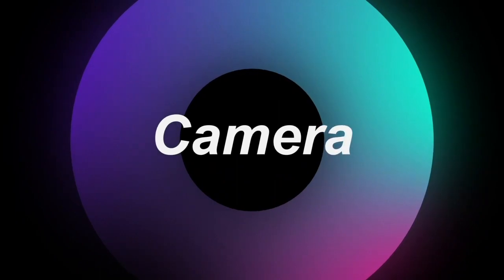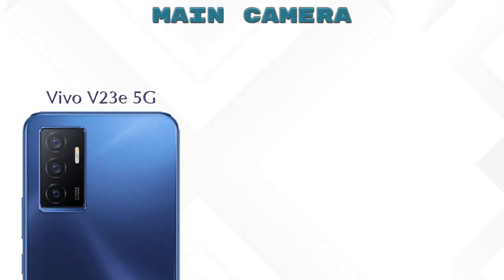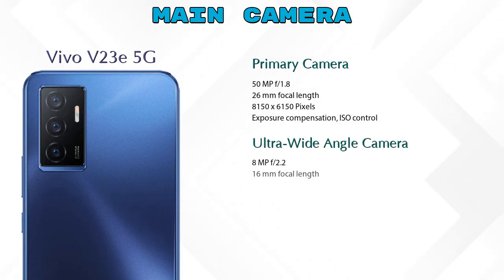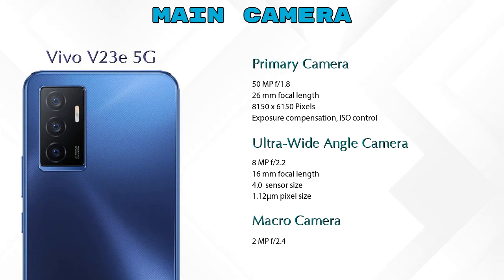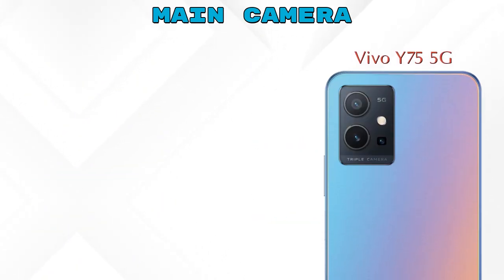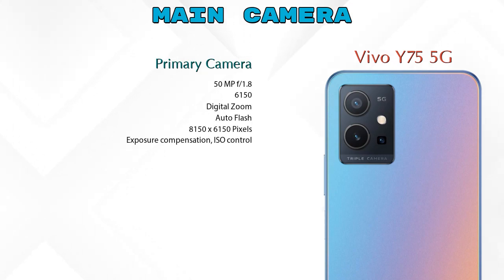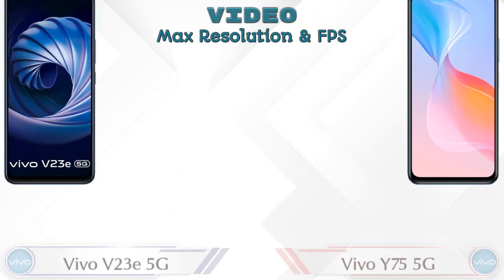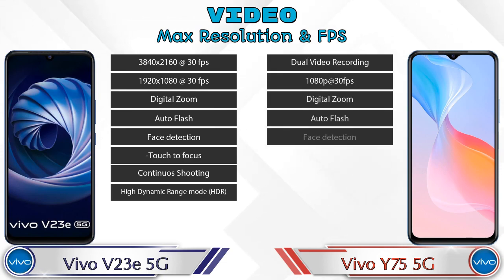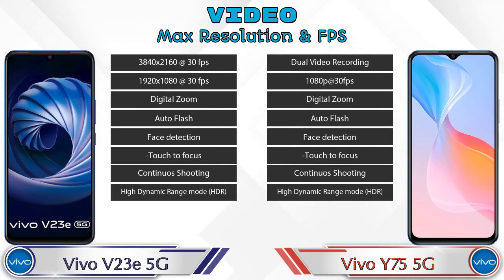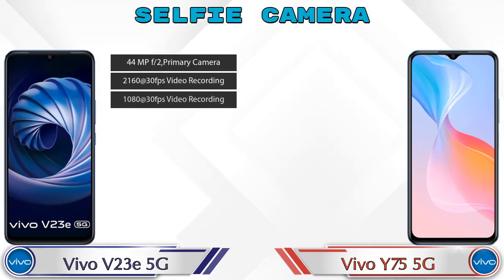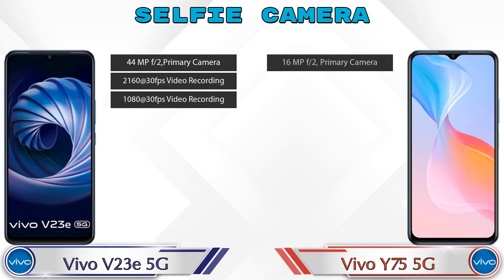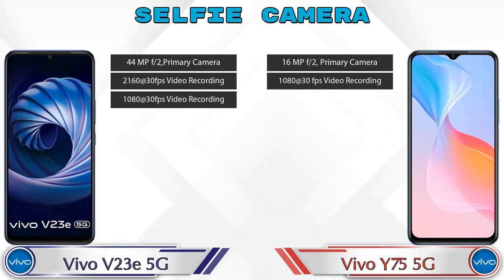Let's see the details about cameras. First, talking about the rear camera: the V23e 5G has three cameras — a primary camera, an ultra-wide angle camera, and a macro camera. The Y75 5G also has three cameras — a primary camera, a macro camera, and a depth camera. For video, both phones have eight different types of features available. For the front selfie camera, the V23e 5G has a single camera with three features, and the Y75 5G also has a single camera with two features.